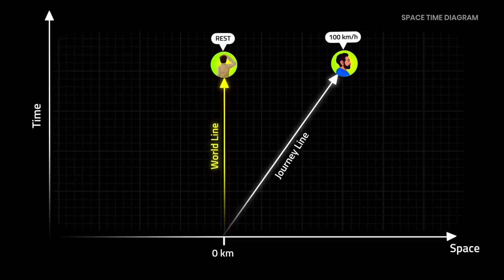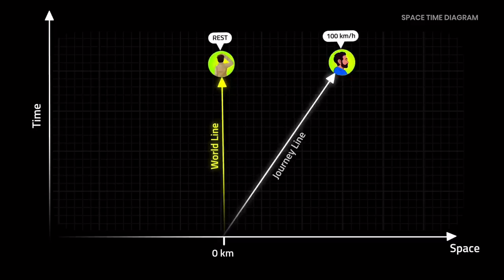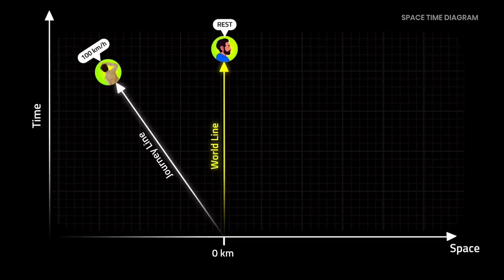Your friend can also claim to be at rest because he travels at constant velocity and has his own frame of reference. Space-time diagrams allow us to change the frame of reference. From your friend's perspective you are moving away from him, so he can make his own world line. From his perspective he is at rest, follows a straight line through time, and you move away from him in space at given time intervals.